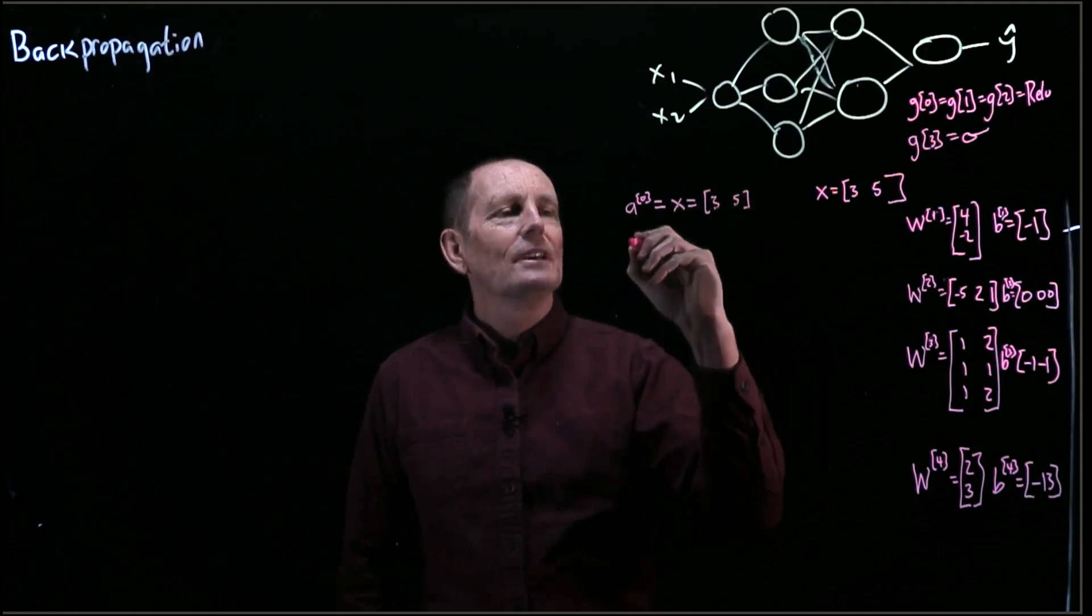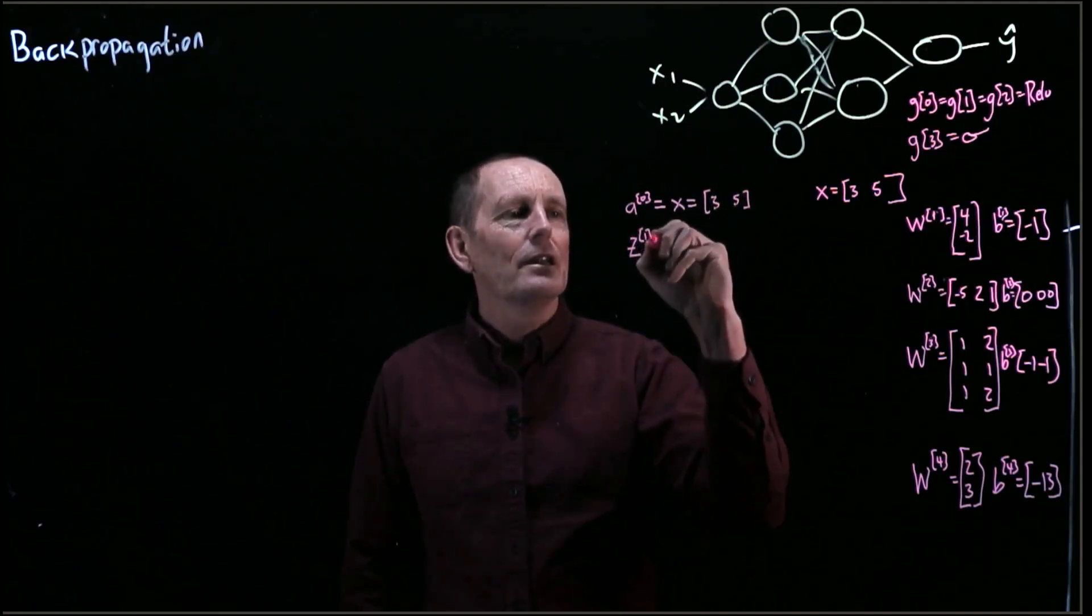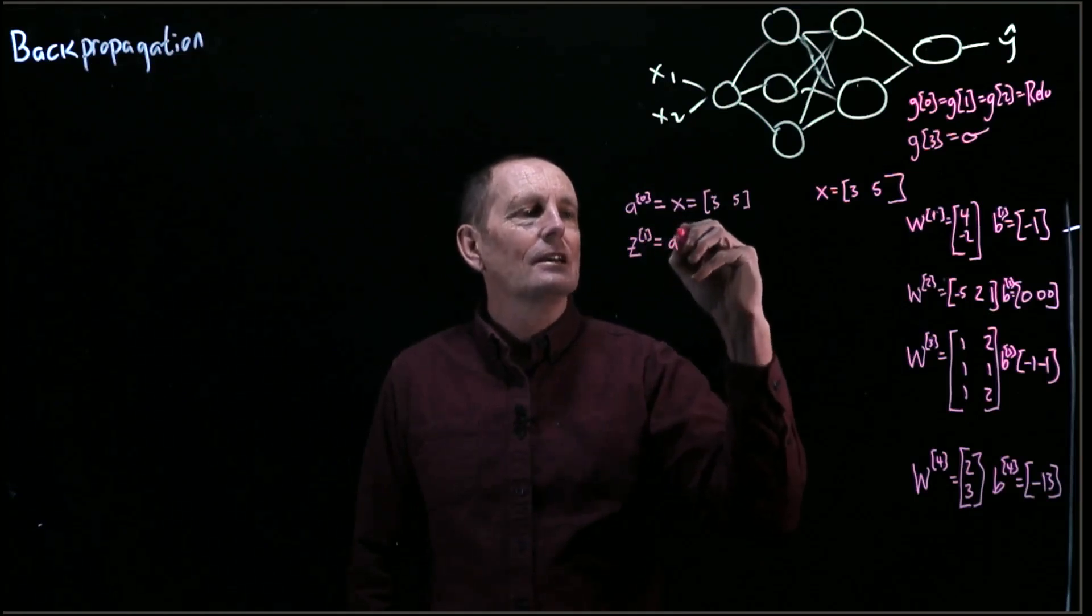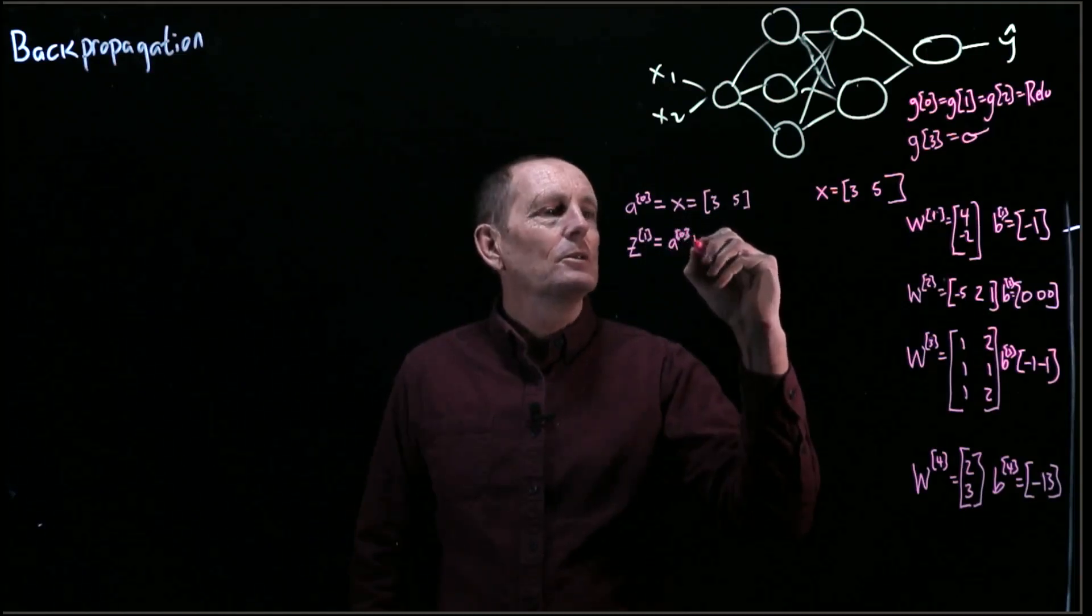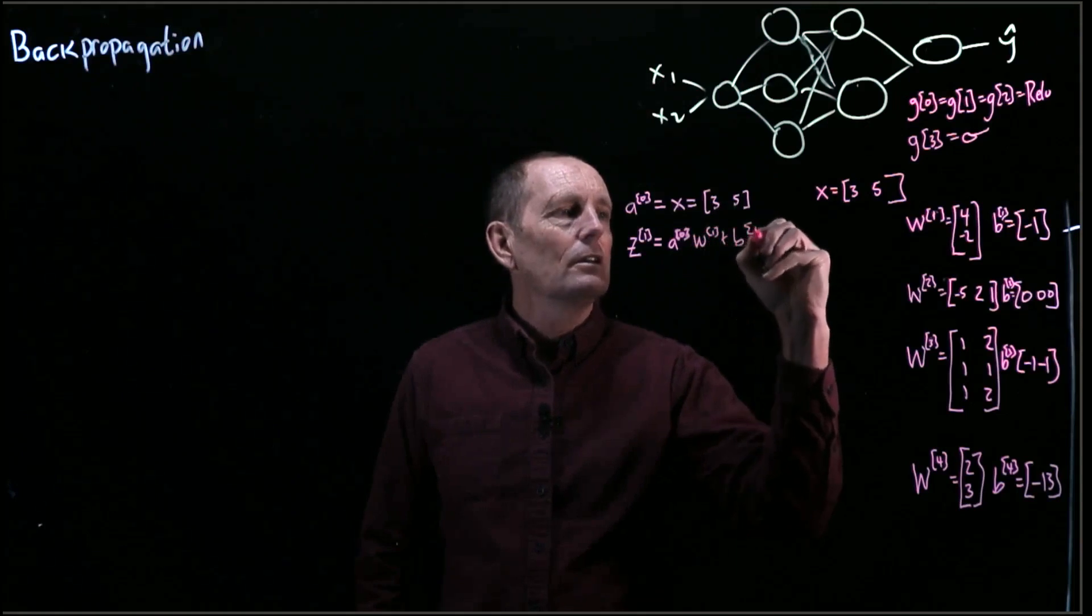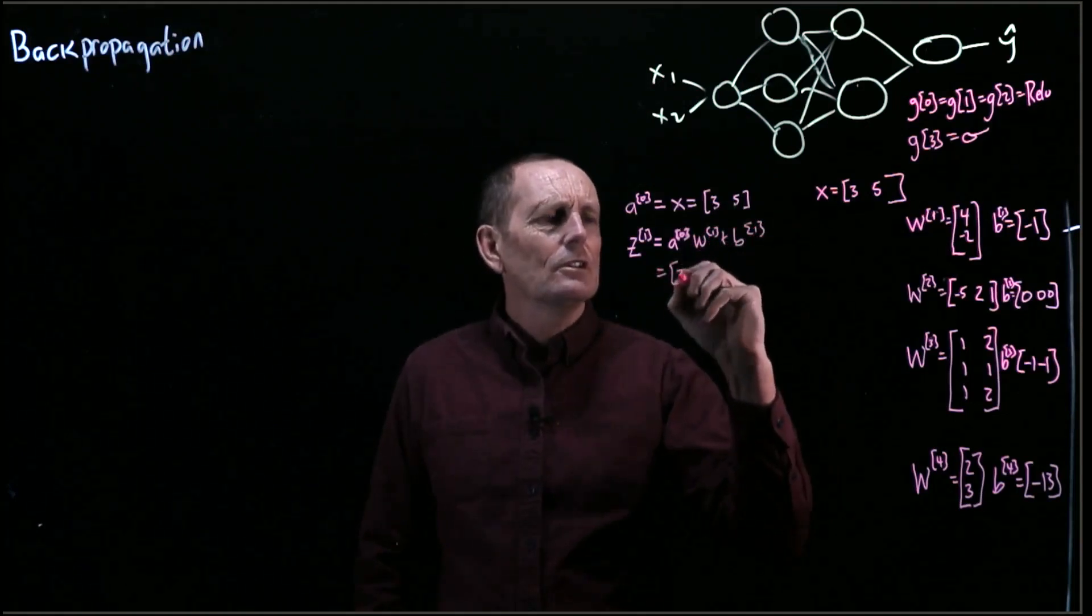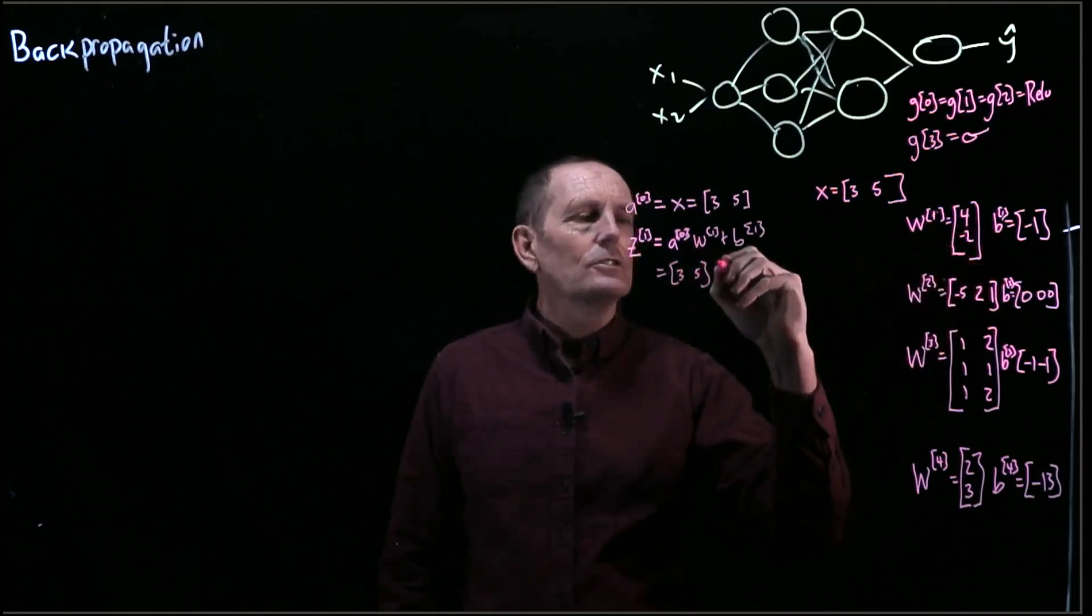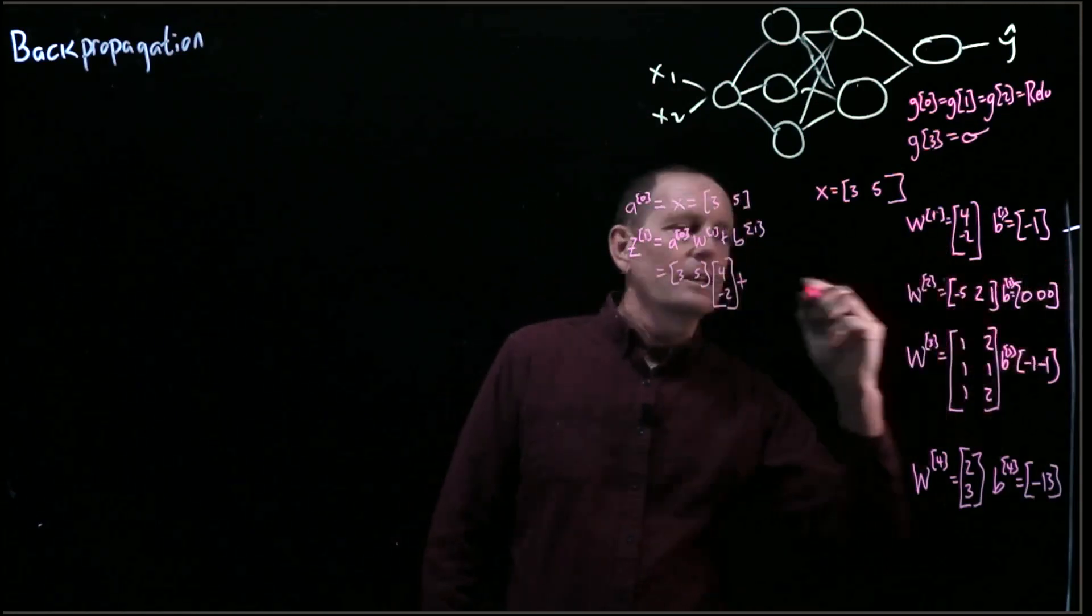So that's equal 3, 5. When we now want to compute Z at 1, that is just equal A at 0 times W at 1 plus B at 1. And that is equal to 3, 5 times W at 1, which is 4, negative 2, plus B at 1, which is negative 1.